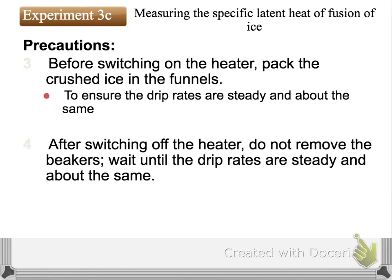Finally, we should ensure that the drip rate is the same before and after switching off the heater. This means we should ensure that all the energy from the heater is totally absorbed by the ice and then melted into water, to maximize energy transfer and minimize error. So I hope this approximately 10-minute explanation has given you a quick look at the setup to find out the specific latent heat of fusion experimentally. Hope you can understand it and solve problems afterward. Thank you.